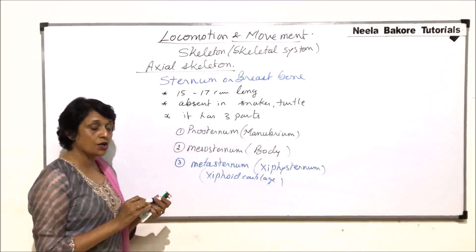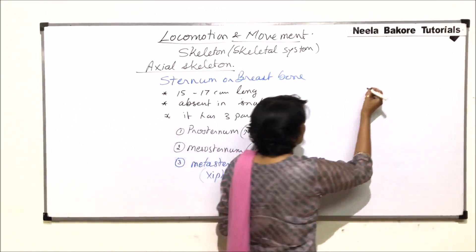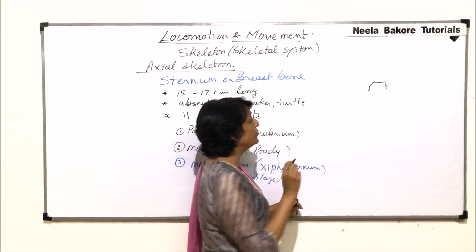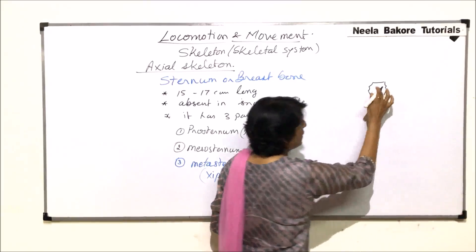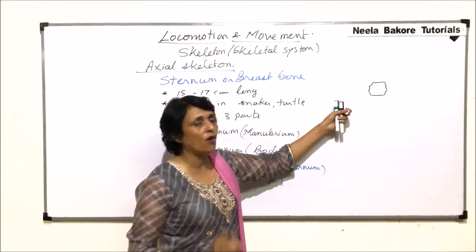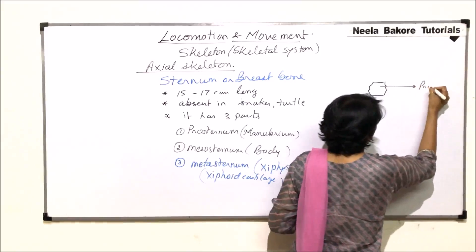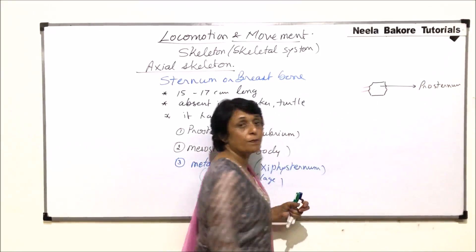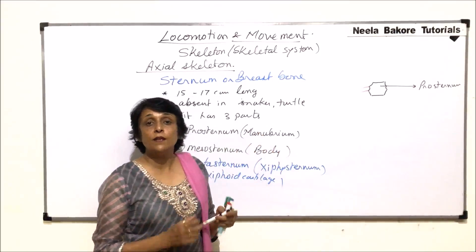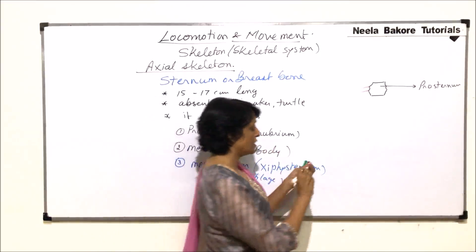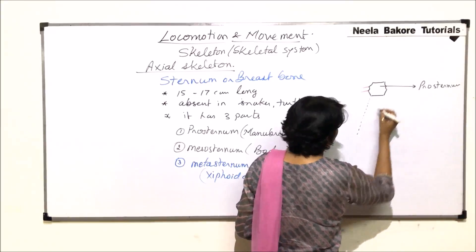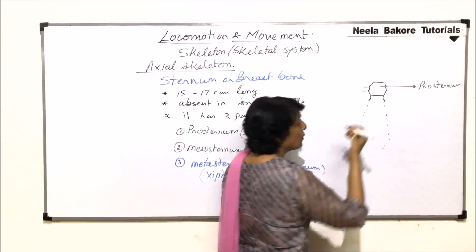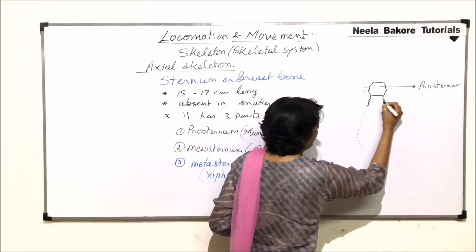Now let us draw the structure to see what parts we are talking about. The prosternum is a little flat piece, approximately hexagonal in shape, and it provides articulation for the first pair of ribs. Below it is the body part — the mesosternum — which, as stated, is the largest part. Here too, maximum ribs are attached via articulating facets.